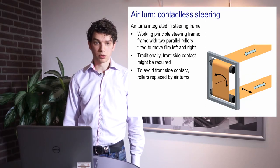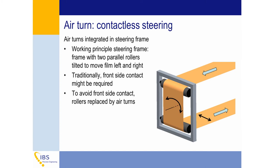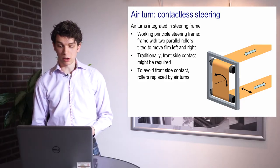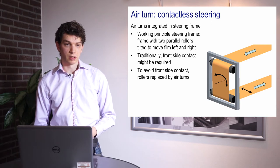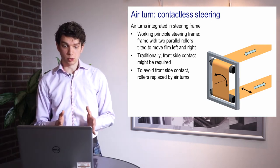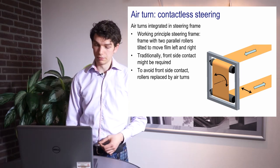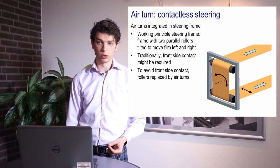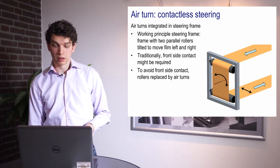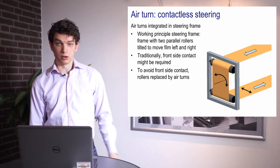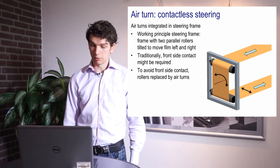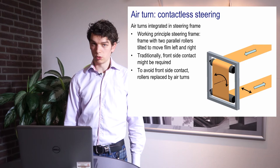A typical application is a steering frame. In a roll-to-roll steering frame, two rollers are mounted parallel to each other in a frame, and by rotating the frame the outgoing side of the web moves left and right — normally used to keep the web in a stable lateral position. When normal rollers are used for a steering frame, it may be necessary to have front-side contact with the coated, sensitive side of the film. To avoid this, a trial was done where the rollers were replaced by air turns.